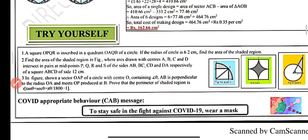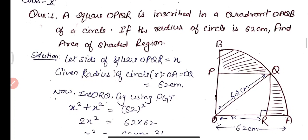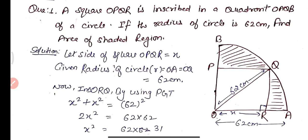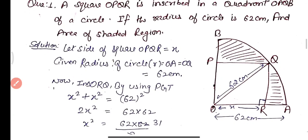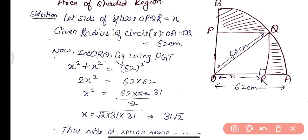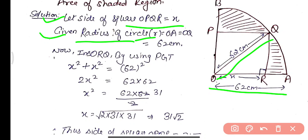Practice Question 1: Square OPQR is inscribed in a quadrant OAQB of a circle. The radius of the circle is 62 cm. Find the area of the shaded region. Let the side of square OPQR be x. OA = OQ = OB = radius = 62 cm. In triangle ORQ, by Pythagoras theorem: OR² + QR² = OQ².